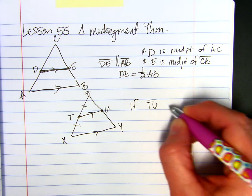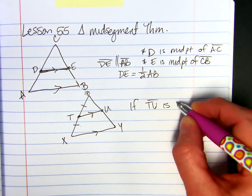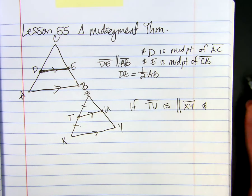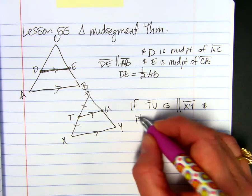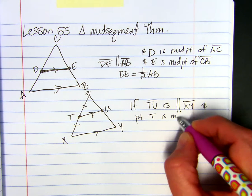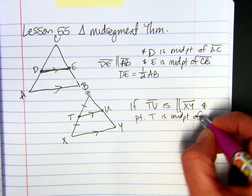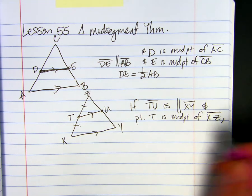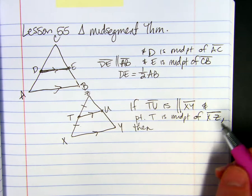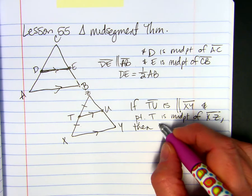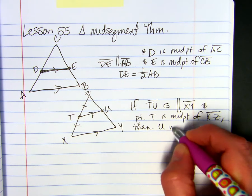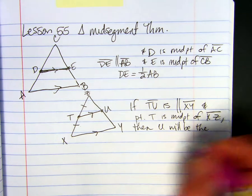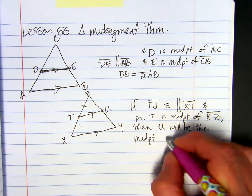If segment TU is parallel to segment XY, and point T is the midpoint of XZ, then U will be the midpoint of ZY.